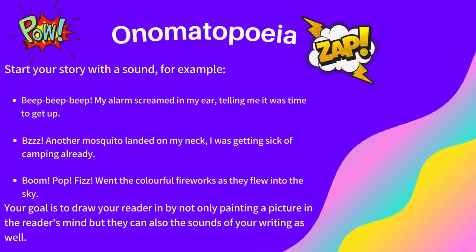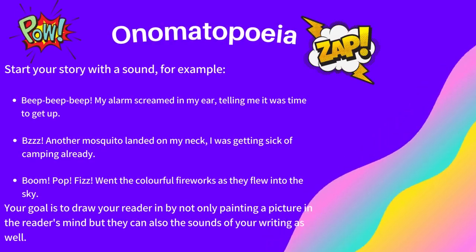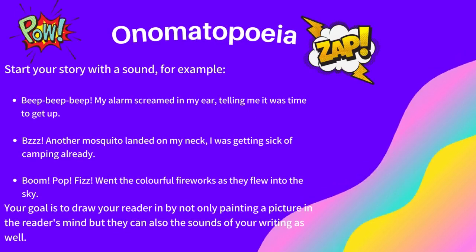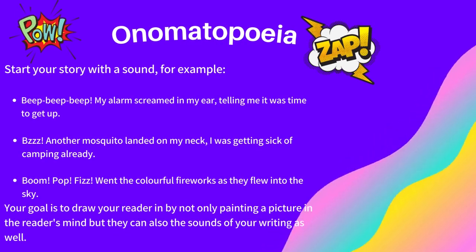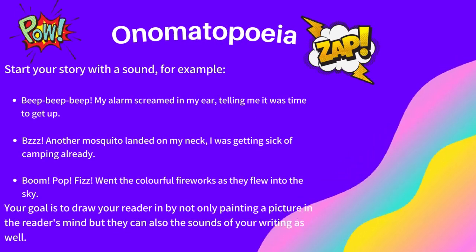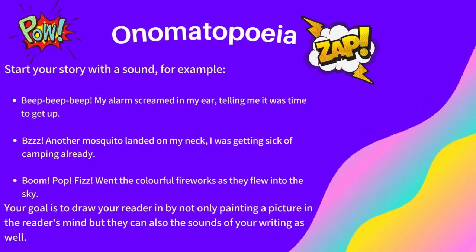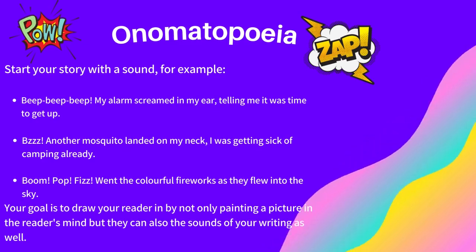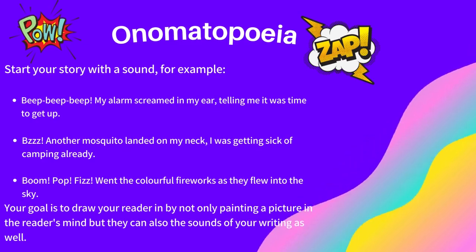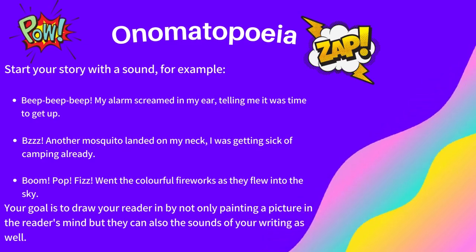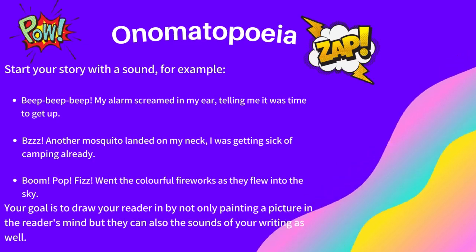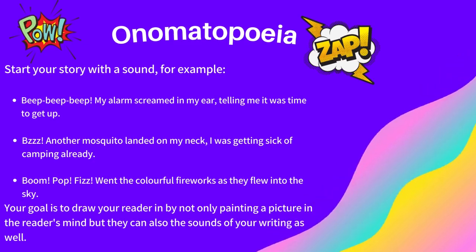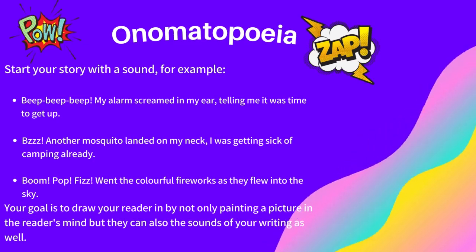Onomatopoeia. Start your story with a sound. For example, beep, beep, beep — my alarm screamed in my ear, telling me it was time to get up. Your goal is to draw your reader in by not only painting a picture in their mind, but so they can also hear the sounds too.